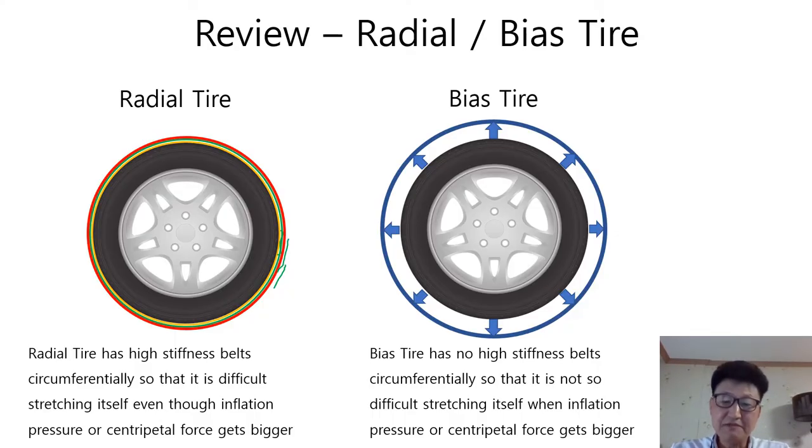On the other hand, bias tire has no high stiffness belts circumferentially so that it is not so difficult stretching itself when inflation pressure or centripetal force gets bigger. As you can see, without strong belts, the rolling radius can be easily extended compared with radial tire due to centripetal force.